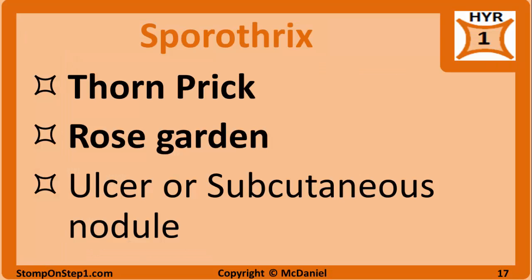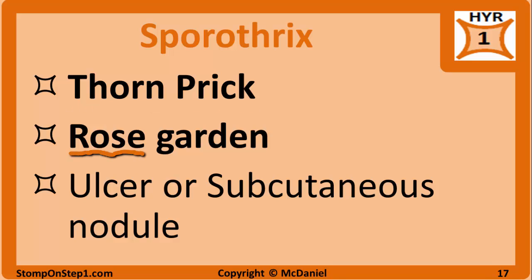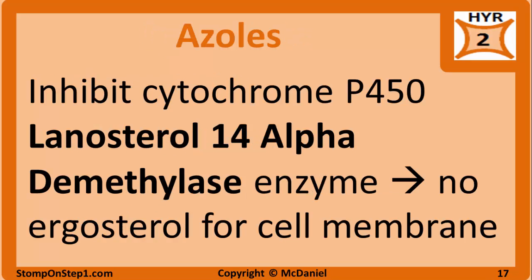Sporotrichosis is seen when spores on a thorn get introduced under the skin by a thorn prick. Question stems usually mention a rose gardener. In immunocompetent individuals, it causes a localized subcutaneous nodule and/or an ulcer at the site of skin breakage.